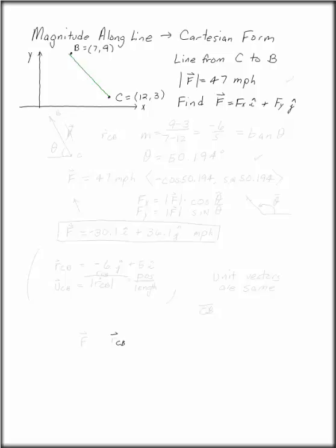F is 47 miles per hour. It lies along the line from C to B.